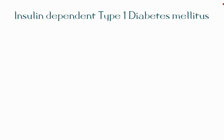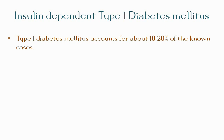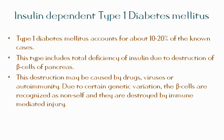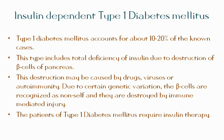Type 1 diabetes mellitus accounts for about 10 to 20 percent of known cases. This type involves total deficiency of insulin due to the destruction of beta cells of the pancreas, so the pancreas fails to secrete insulin in response to glucose ingestion. This destruction may be caused by drugs, viruses, or autoimmunity — due to certain genetic variations, the beta cells are recognized as non-self and destroyed by immune-mediated injury. Patients with type 1 diabetes mellitus require insulin therapy, including insulin shots.